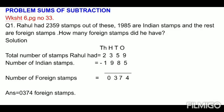So first statement will be total number of stamps Rahul had, that is 2,359. And number of Indian stamps he is having: 1,985. Now we have to find out how many foreign stamps Rahul had. We will subtract Indian stamps from the total number of stamps Rahul had and you will get the answer.